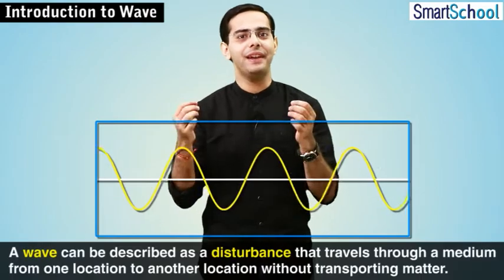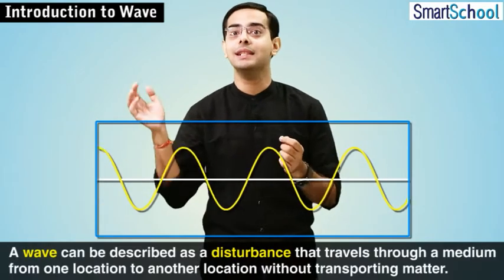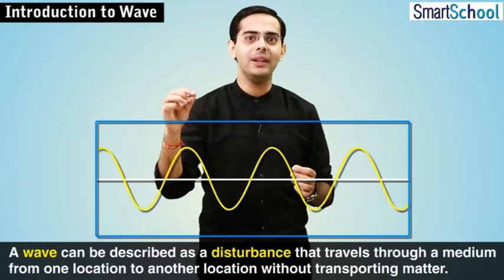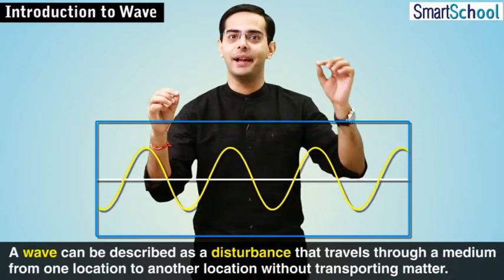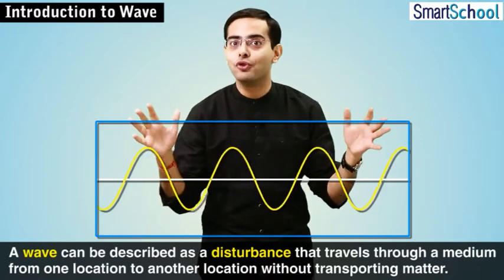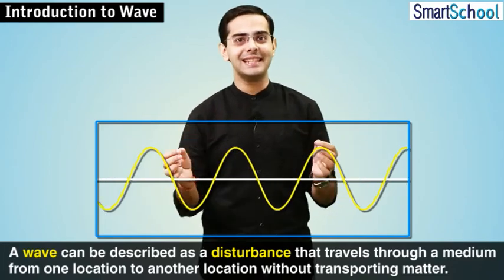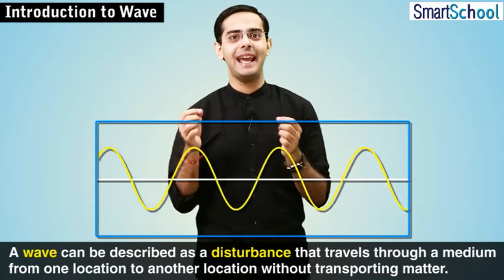So how would you define a wave? A wave can be described as a disturbance that travels through a medium from one location to another location without transporting any matter. With this we come to the end of this module on the introduction to waves, and in our next module we are going to discuss the different types of waves.